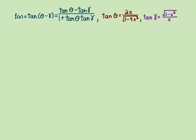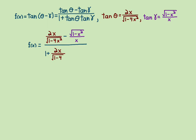Then simplify, because you'll have a complex fraction — a fraction of fractions. So we get: 2x over the square root of 1 minus 4x squared, minus the square root of 1 minus x squared over x, all over 1 plus 2x over the square root of 1 minus 4x squared times x times the square root of 1 minus x squared over x.